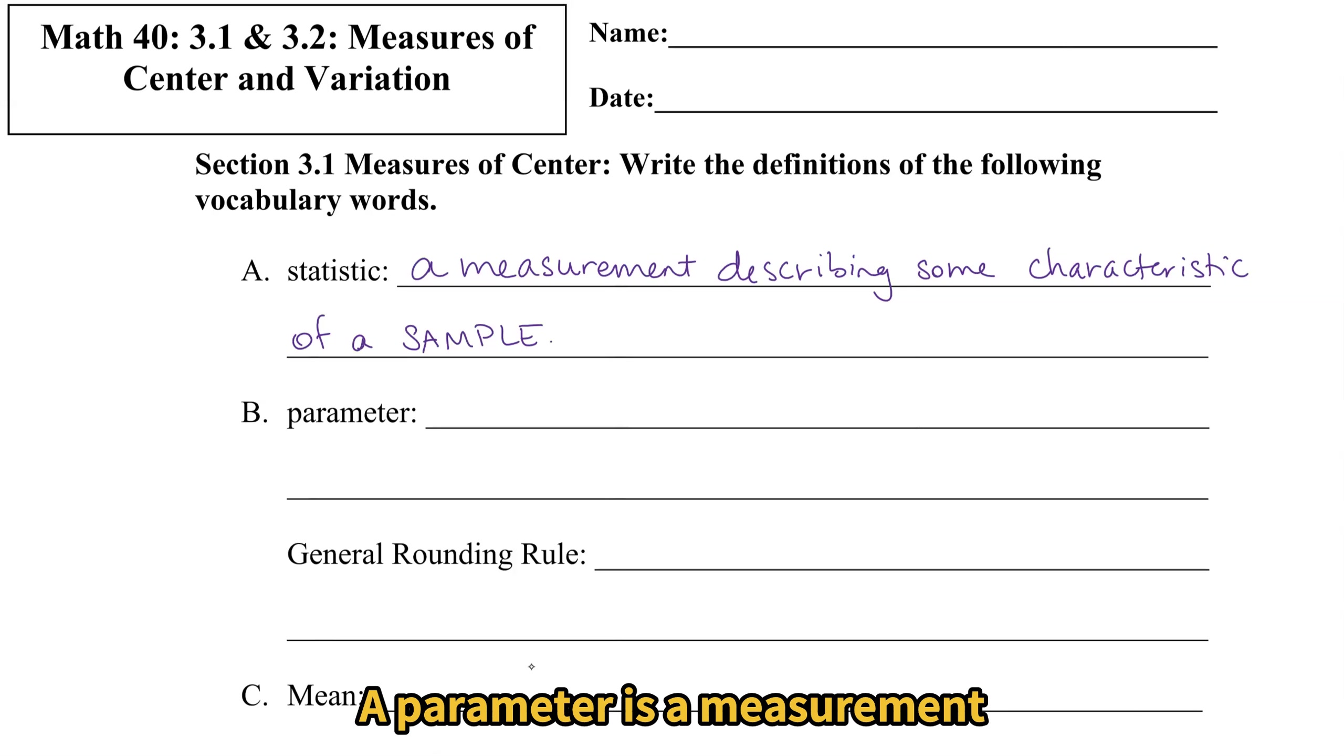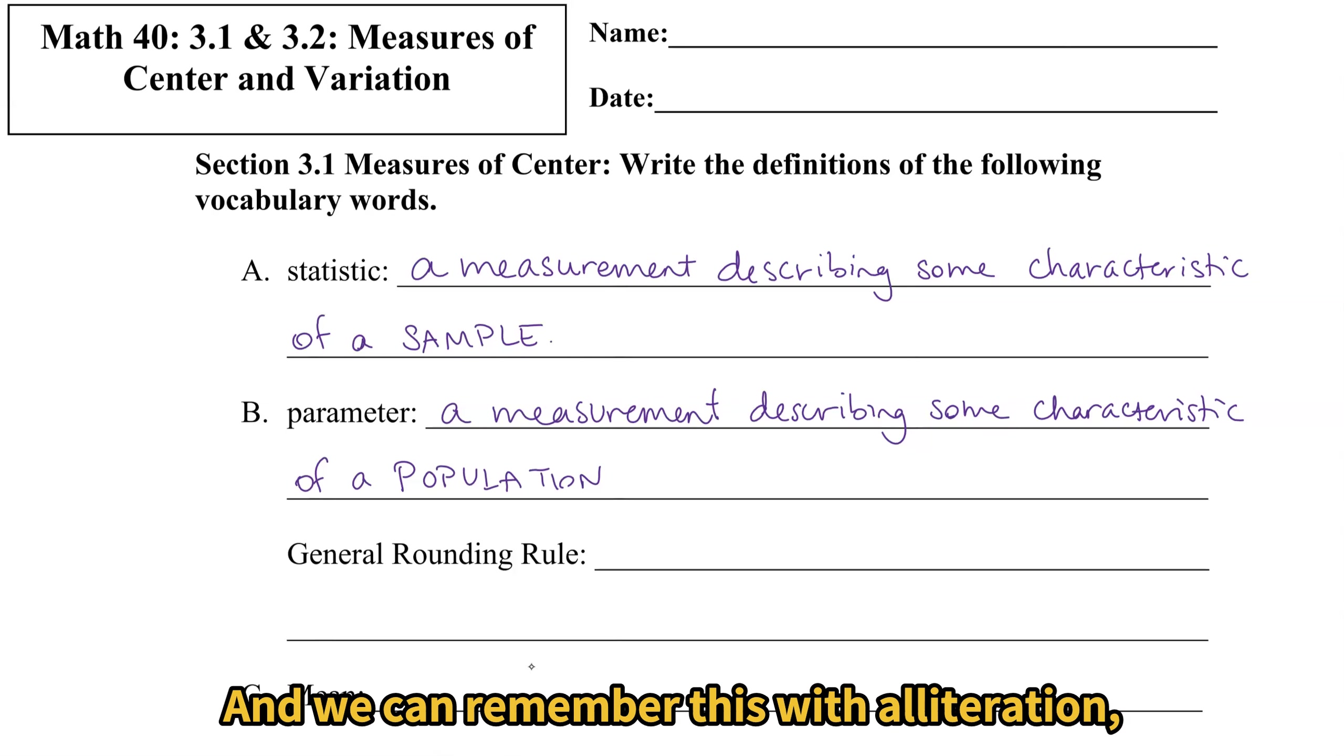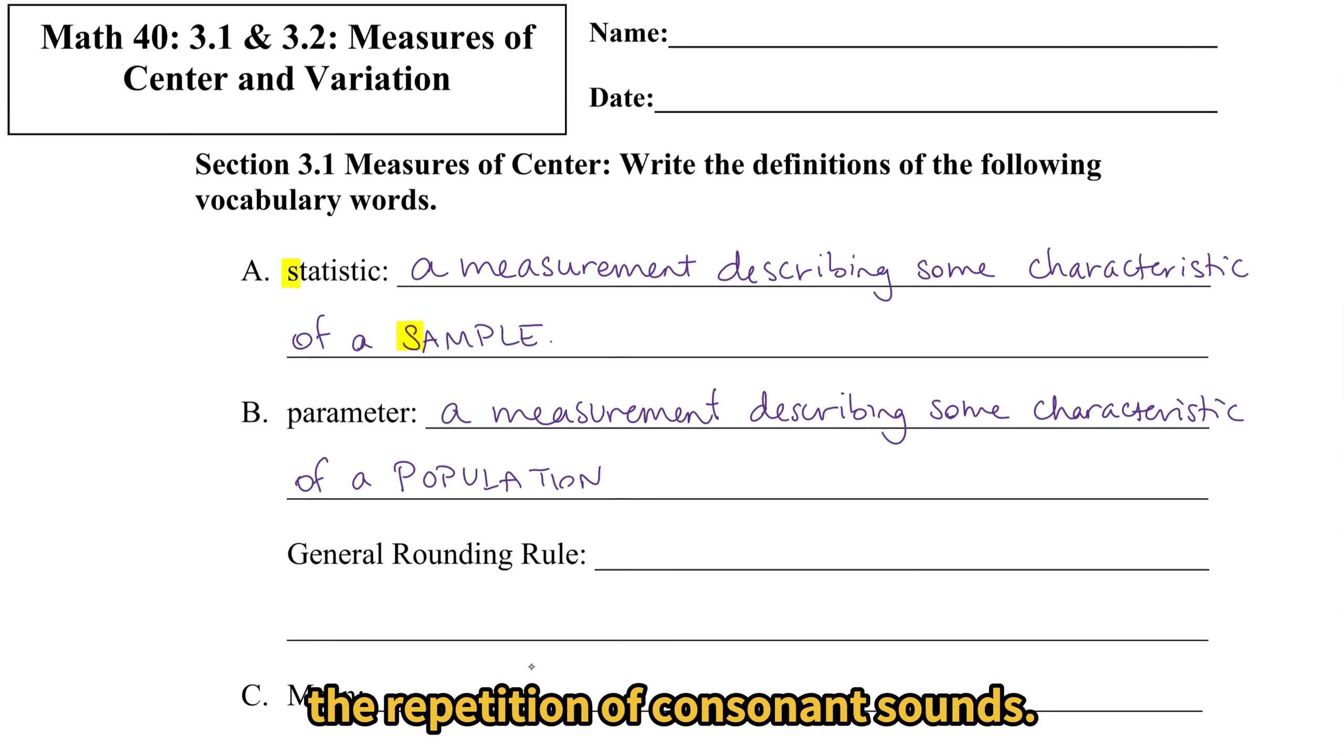A parameter is a measurement describing a characteristic of a population. And we can remember this with alliteration, the repetition of consonant sounds. Statistic is for a sample and a parameter is for a population.